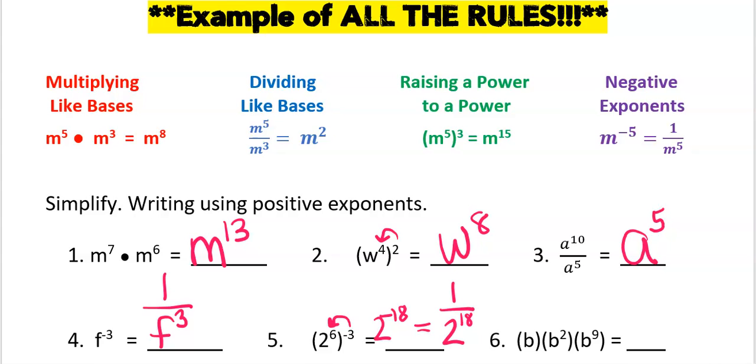Now the last one here has an invisible exponent. Don't forget that b has a power of one. So since I'm adding my powers together, I will add one plus two plus nine.